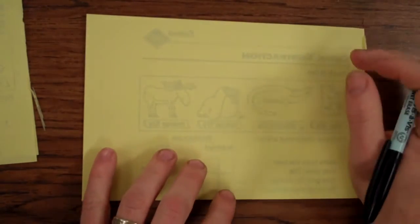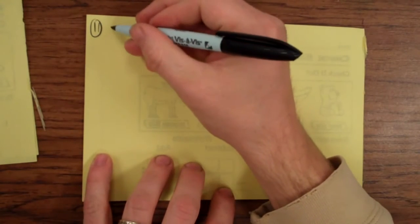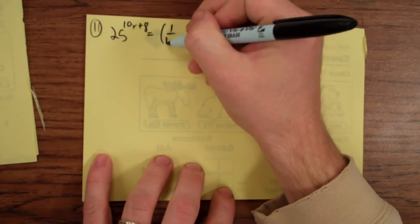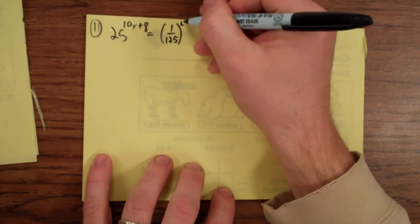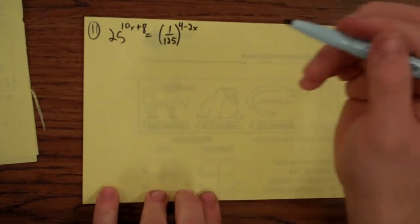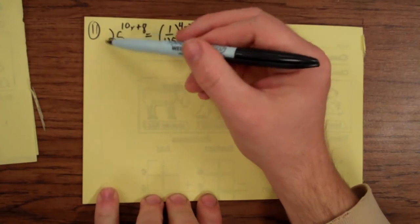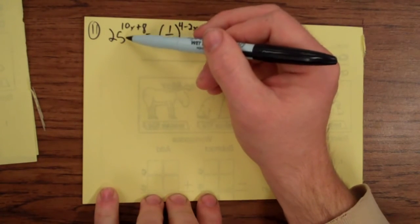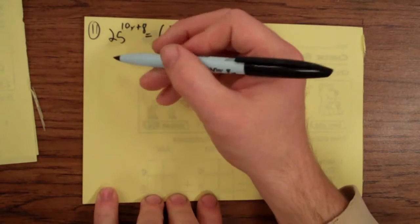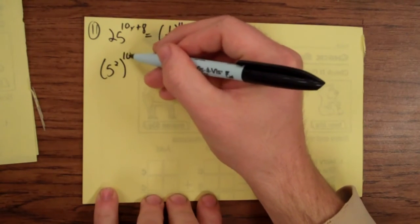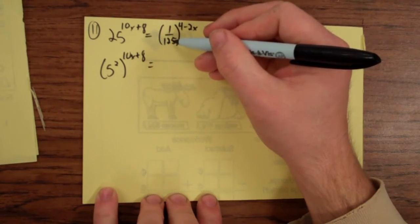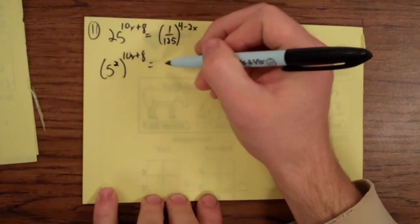Let's try one more. That's pretty challenging. Number 11. That's 25 to the 10x plus 8 equals 1 over 125 to the 4 minus 2x. Now this, wow, this seems a little crazy. First, it's probably easiest to look at this one. Let's think about the base that we're going to use to get 25. Let's think of the number we're going to raise to a power to get 25. The thing that jumps to my head is it's a perfect square, so 5 squared is 25. And that's still raised to the 10x plus 8. Let's think about 125.